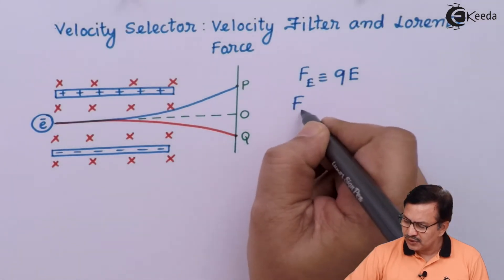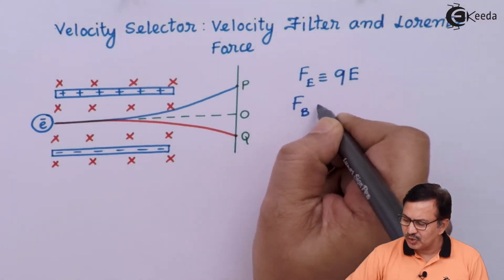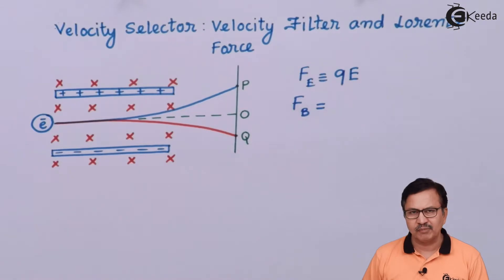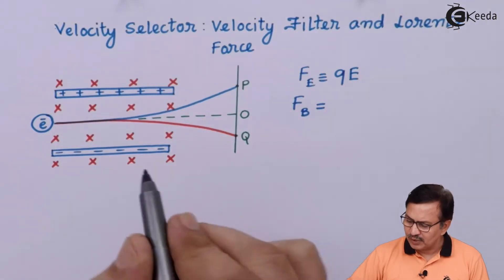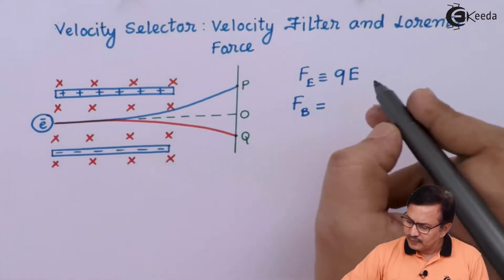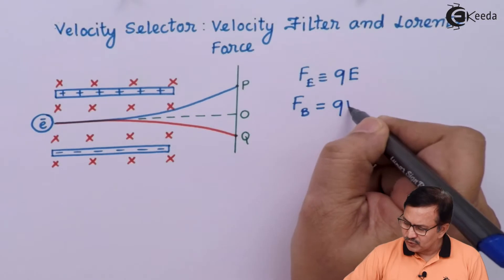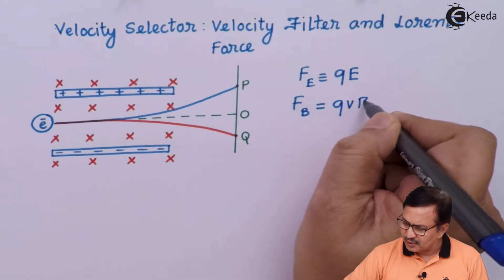Similarly, the force due to the magnetic field is going to be equal to FB, that is going to be equal to Q × V × B.